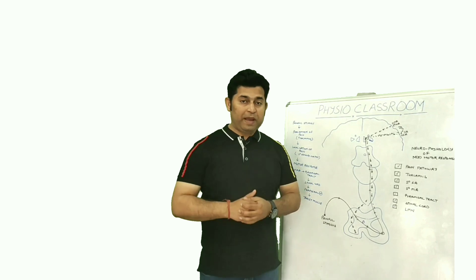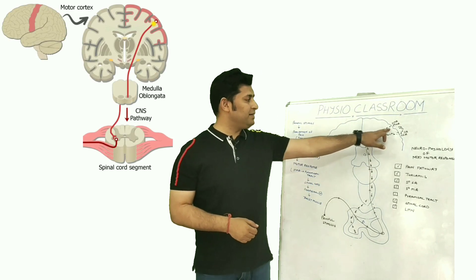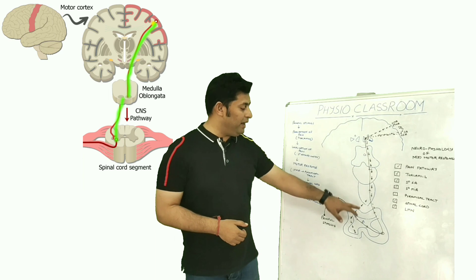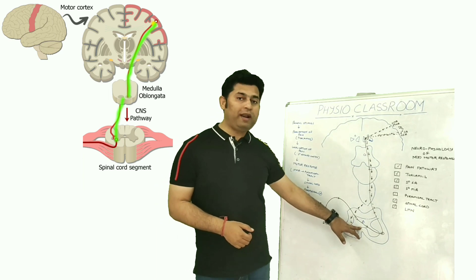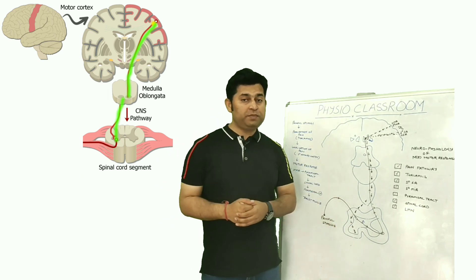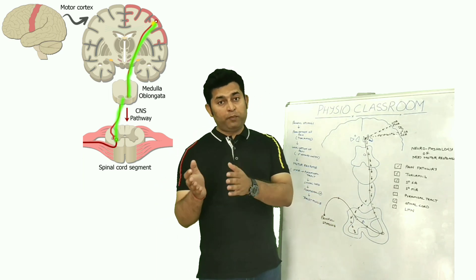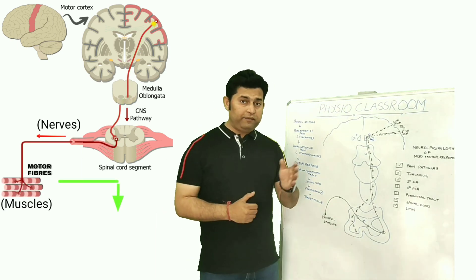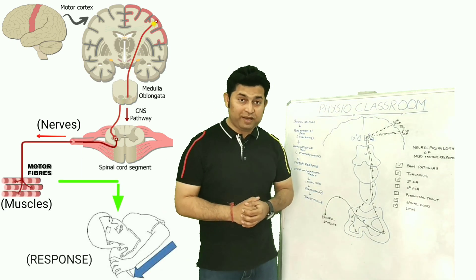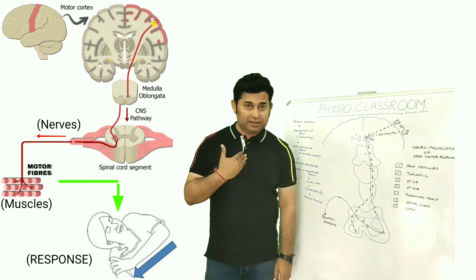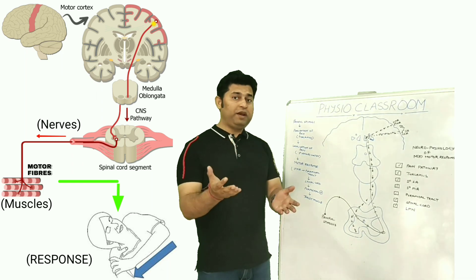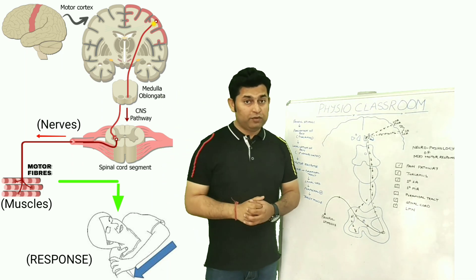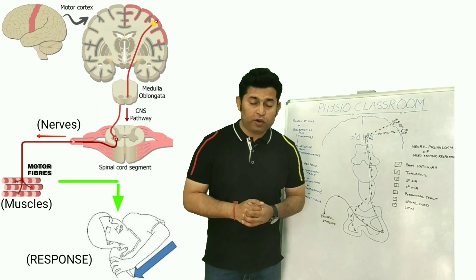The primary motor area sends descending motor impulses to the region of the spinal cord responsible for production of the motor response. So if the painful stimulus has been given at the level of the sternum and the patient brings the right hand to remove that painful stimulus,